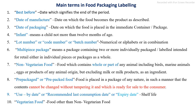These are some main common terms involving in Food Packaging Labeling: best before, date of manufacturing, date of packaging, infant foods, lot number, batch number, code number, multiple package, vegetarian food, non-vegetarian food, pre-packed foods, use by dates, and expiry dates. These are some of the common terms.